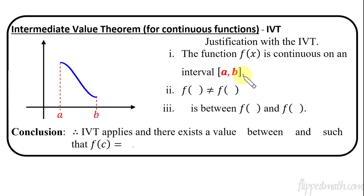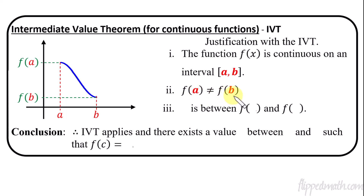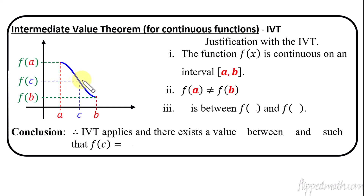If we have a function that is continuous on an interval a to b, that gives us the very first condition for being able to use the Intermediate Value Theorem. Next, we're going to look at the output values — f(a) and f(b). Those two values cannot equal each other. If the output values are greater than or less than each other, you're good to use IVT. Then the last thing is we'll have a c value — some value c that's in between a and b — and f(c) has to be in between f(a) and f(b). That y value will also be called k.